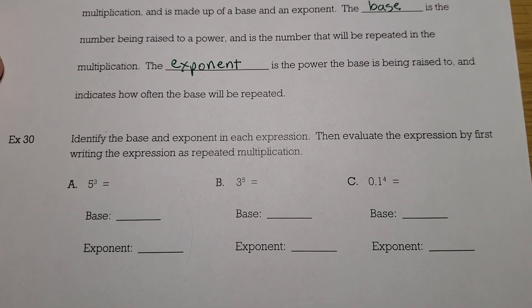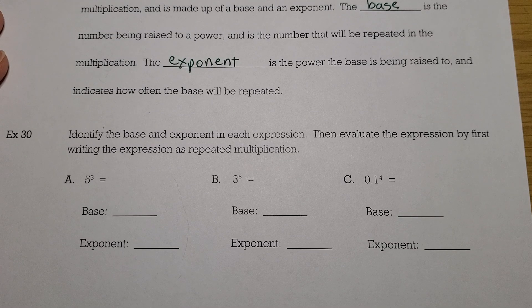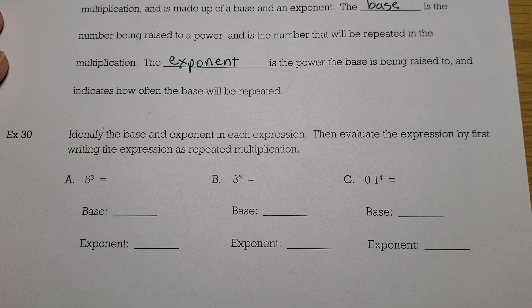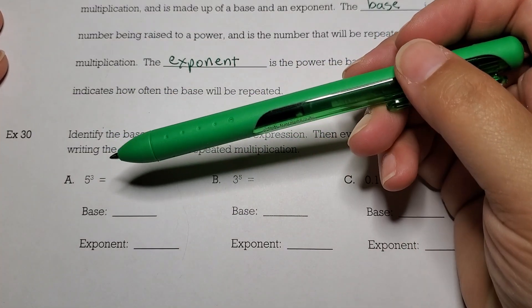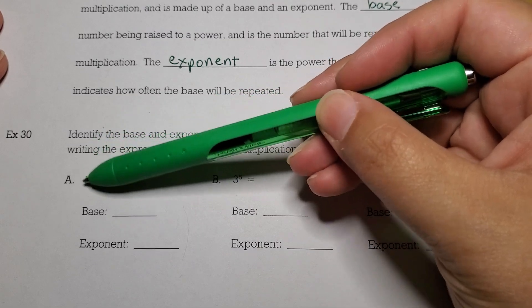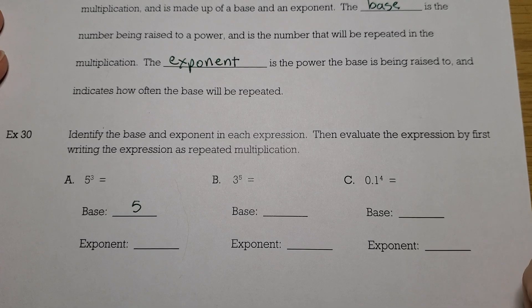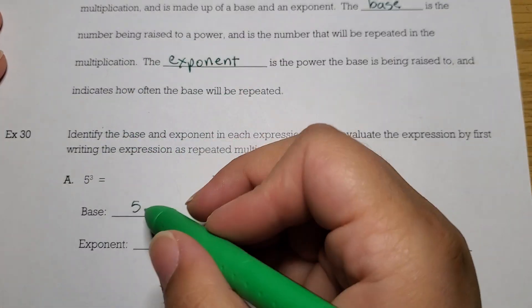So let's do an example of identifying the base and the exponent in each expression, and then we'll use repeated multiplication to evaluate. Here we have 5 to the third. The base is the big number, so in this case the base is 5. And the exponent is the little number up top, so the exponent here is 3.